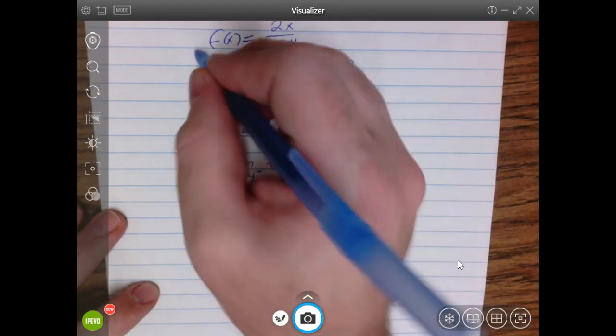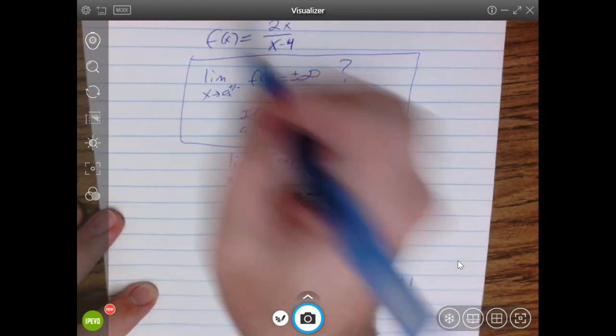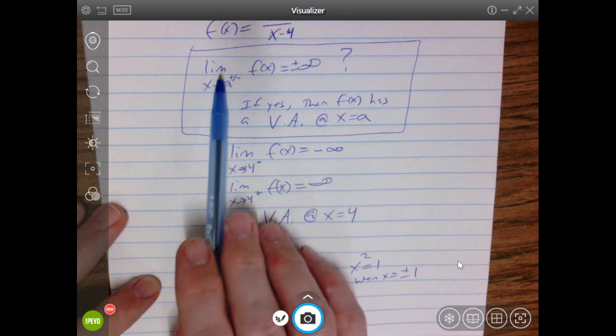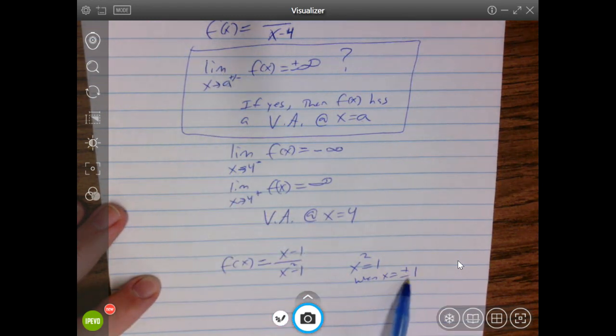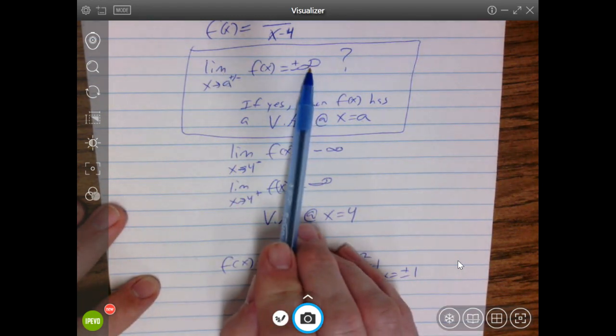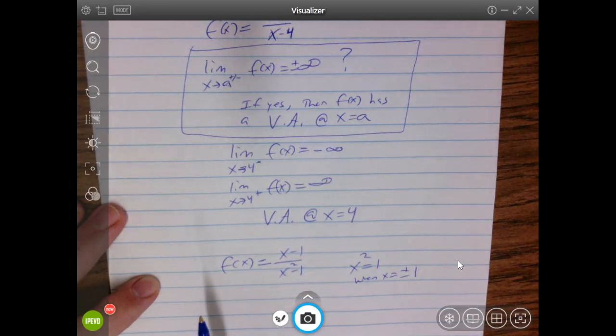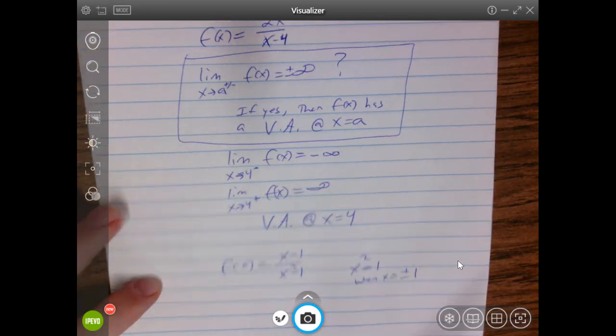But that's not actually what happens here. Because, again, this has to happen in order for our vertical asymptote to exist. The limit as x approaches plus or minus 1 needs to be infinite. It has to be plus or minus infinity. And that's not going to happen here. So watch what happens.